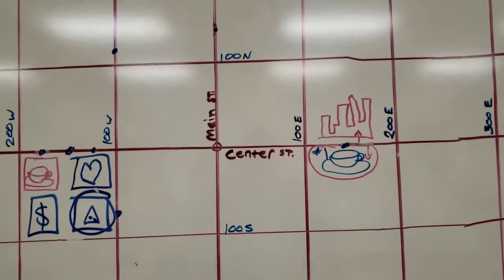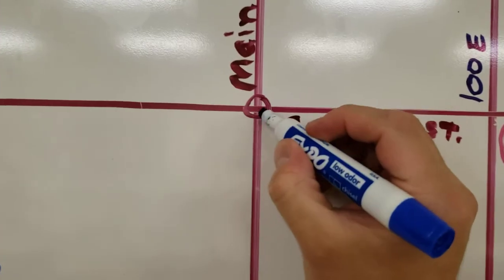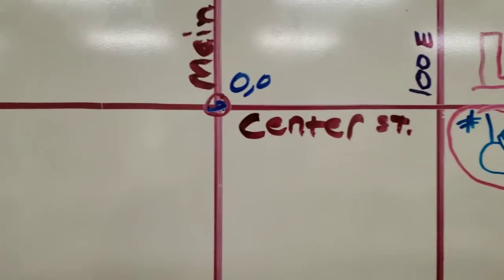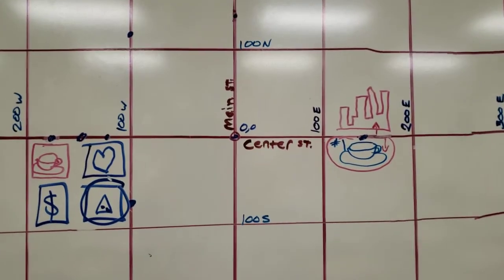So, I hope that makes a little bit more sense. If you think of it like a math grid where Center and Main intersect, that's just your zero, zero. Okay, I don't know if you're better at math or what, but hopefully that helps. Any more questions, just let me know.